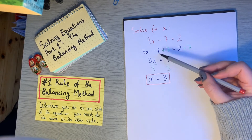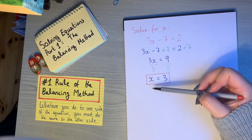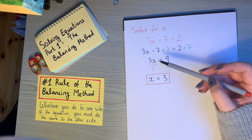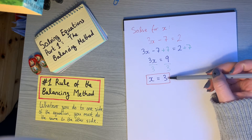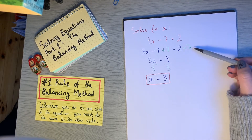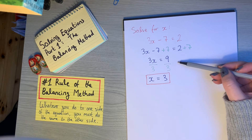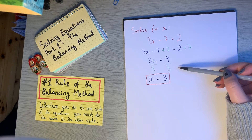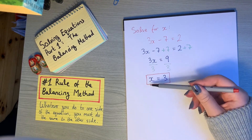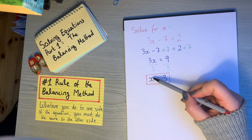So what we've just done is used the balancing method to gradually simplify our equation until we have just 1x on one side and whatever we're left with on the other side, which tells us what x equals. In this example, I added 7 to both sides, then divided both sides by 3, keeping the equation balanced throughout and simplifying it down as much as possible to leave us with x by itself.